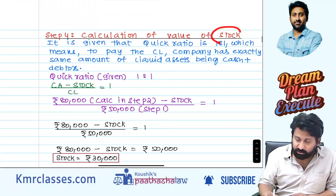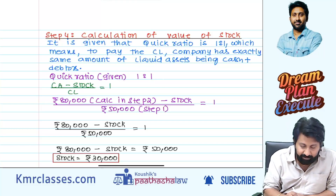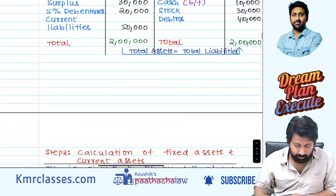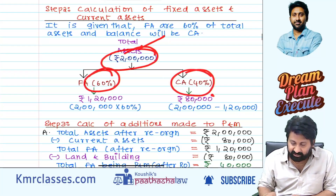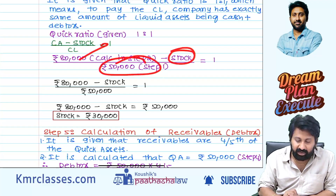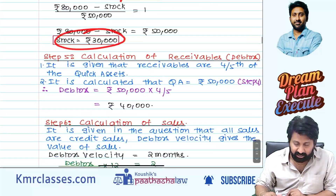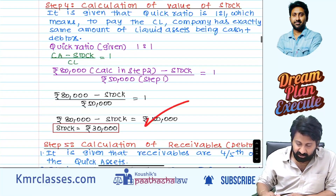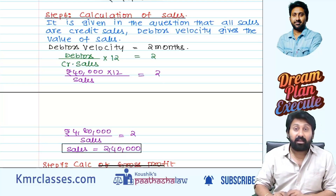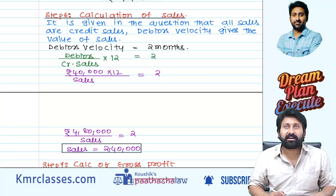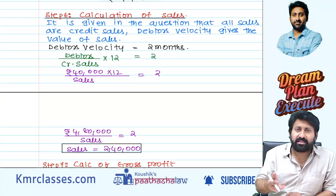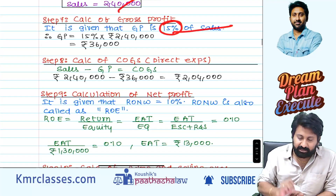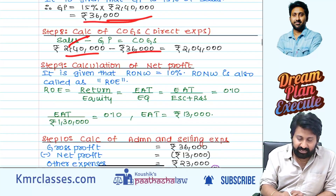Whenever the question involves valuation of stock using quick ratio: quick ratio = (current assets minus stock) divided by current liabilities. Total assets are given — fixed assets at 60%, current assets at 40% = 80,000. Current liabilities are 50,000 (calculated in the previous step). Stock is calculated as 30,000. Receivables are four-fifths of quick assets; quick assets = 50,000, so receivables = 40,000. For sales calculation: debtors' velocity is debtors by sales into 100. Since all sales are assumed on credit, 40,000 divided by sales into 12 = 2 months, so sales = 2,40,000.